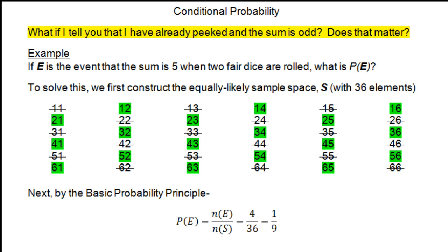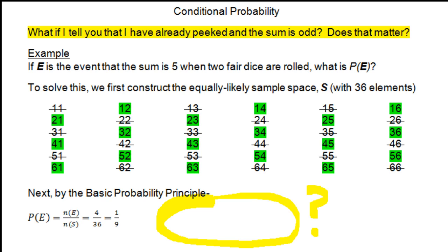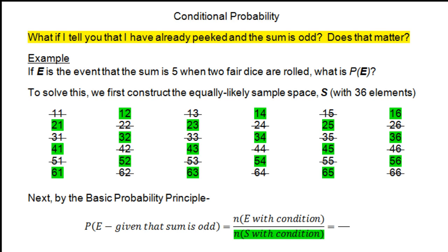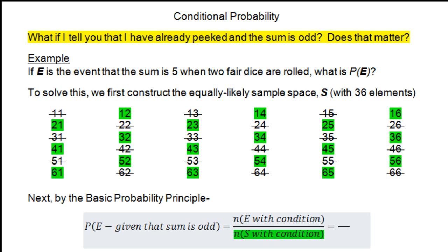So that modifies the basic probability principle result we got earlier. This is going to change, or at least I believe it will. To acknowledge the fact that I expect these probabilities to change, I'm going to change the way I word this. Instead of just calculating the probability of E that the sum is 5, I'm going to say I'm calculating the probability of E given that the sum is odd. My answer will still use the basic probability principle, but both numerator and denominator values may change because the sample space changed.